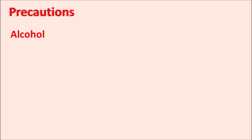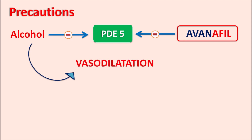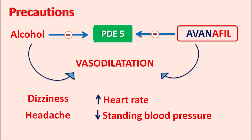There is a significant interaction with alcohol. Alcohol inhibits phosphodiesterase type 5 enzyme activity, and avanafil also selectively inhibits this enzyme. When both alcohol and avanafil are co-administered, they can produce severe vasodilation, resulting in symptoms such as dizziness, headache, increased heart rate, and decreased standing blood pressure, potentially causing sudden drop attacks.